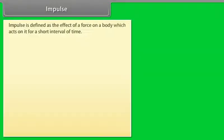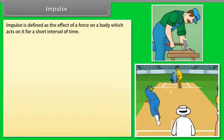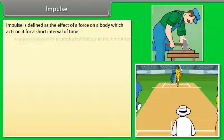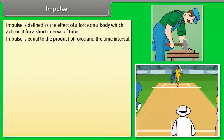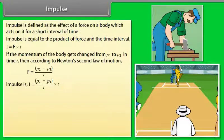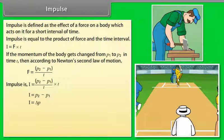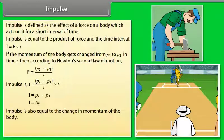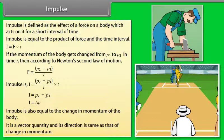Impulse is defined as the effect of a force on a body which acts on it for a short interval of time. Impulse = F × T. If the momentum of a body changes from P1 to P2 in time T, then by Newton's second law: F = (P2 − P1) / T. Therefore, Impulse I = P2 − P1 = ΔP. Impulse equals the change in momentum of the body. It is a vector quantity and its direction is the same as that of the change in momentum.